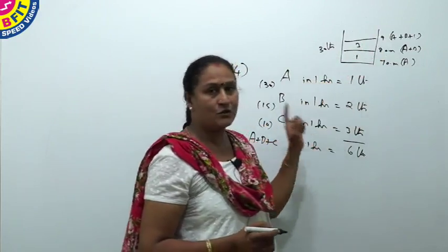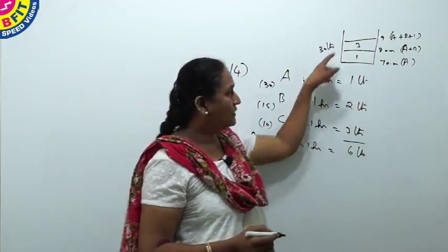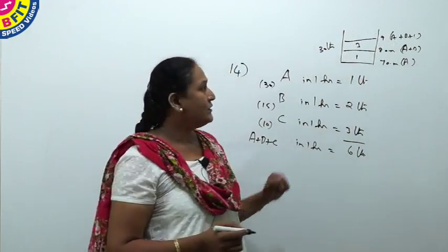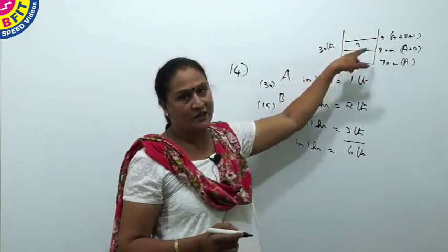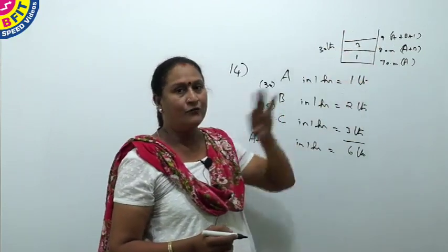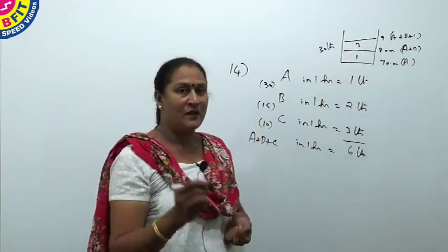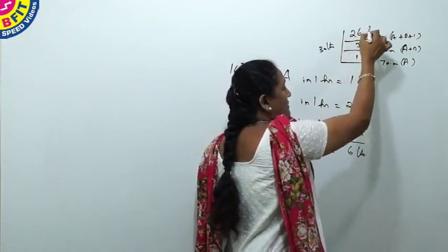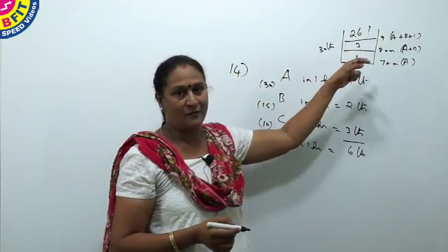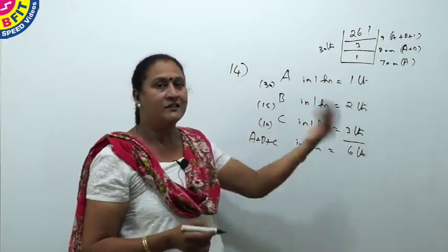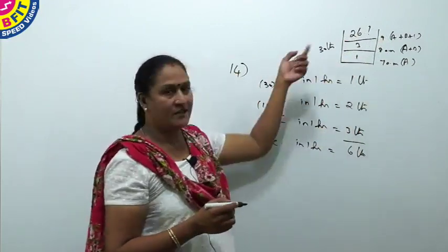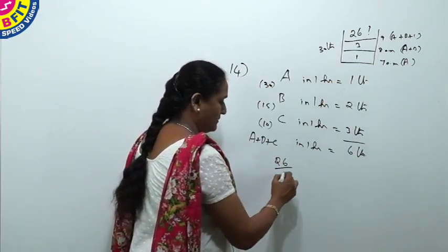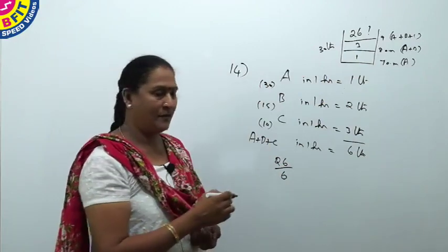At 9 o'clock, C is also open. All the 3 taps remain open till the tank is filled. In this 30, how many liters of water is there? At 9 o'clock, 4 liters is there. What is the remaining tank? We need 26 liters more. From 9, every hour, 6 liters is poured. To fill 26 liters, what will be time taken? 26 divided by 6 will be the time taken.